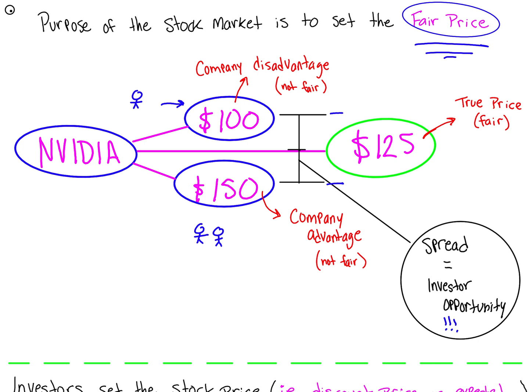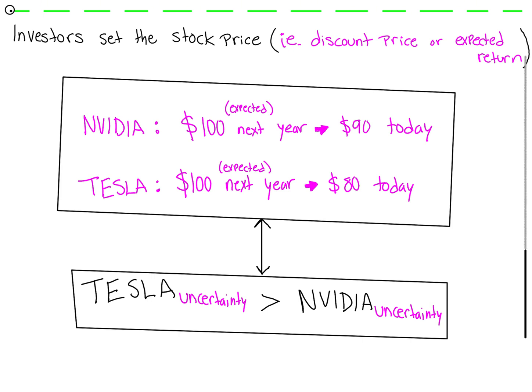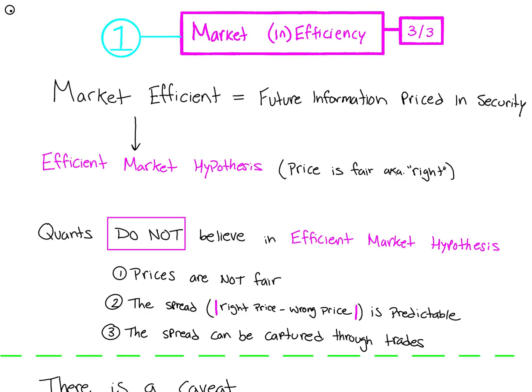Who sets the stock price? It's investors and traders that set the stock price, also known as the discount price or expected return. If we expect NVIDIA to be $100 next year, we may set the price to $90 today because we're discounting. On the other hand, we also expect Tesla to be $100 next year, but we've priced it at $80 today. That discounting reflects the uncertainty we have in each company - meaning we are less certain in Tesla than in NVIDIA.